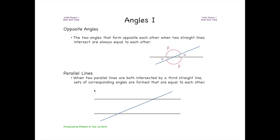Finally, the last geometry we'll consider is when two parallel lines are both intersected by a third straight line. In this case, there will be sets of corresponding angles that are formed that are equal to each other. Specifically, this angle and this angle, these interior angles are going to be equal to each other. So this angle will be equal to this angle.